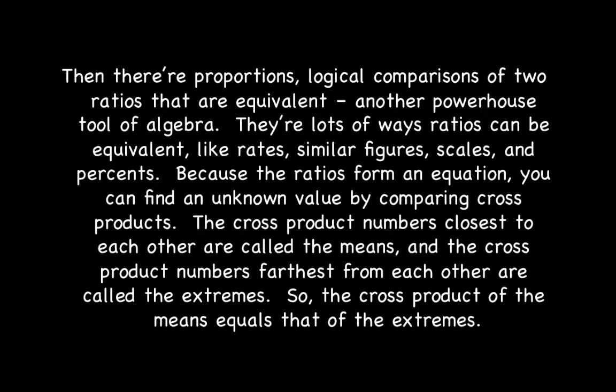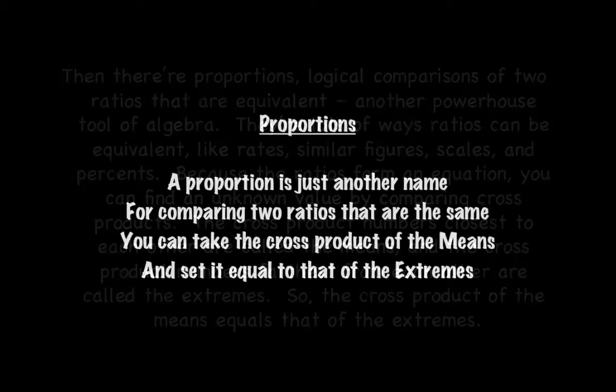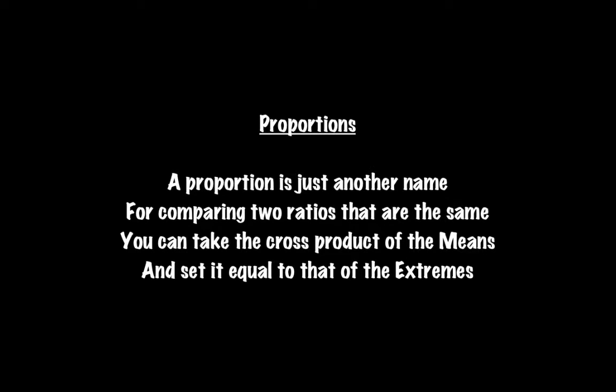Then there are proportions — logical comparisons of two ratios that are equivalent, another powerhouse tool of algebra. There are lots of ways ratios can be equivalent, like rates, similar figures, scales, and percents. Because the ratios form an equation, you can find an unknown value by comparing cross products. The cross product numbers closest to each other are called the means, and farthest are called the extremes. The cross product of the means equals that of the extremes. A proportion is just another name for comparing two ratios that are the same.